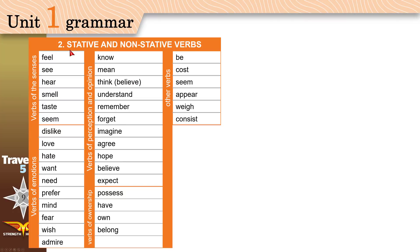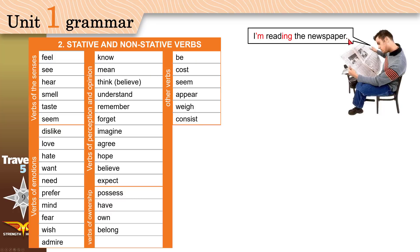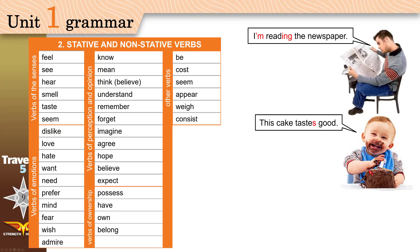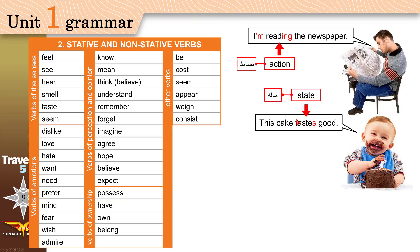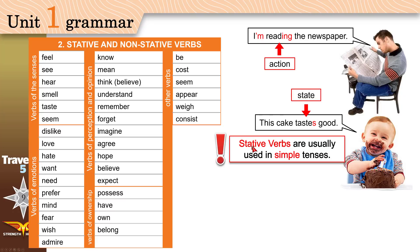Now let's talk about stative and non-stative verbs. Consider: 'I am reading the newspaper' versus 'this cake tastes good.' The verb 'read' is an action verb — the man is actually doing the reading. But what about 'tastes'? The cake isn't doing anything; we are describing it using a verb. It's just the state of the cake — it tastes good. Stative verbs are usually used in simple tenses; we usually don't add -ing to them.